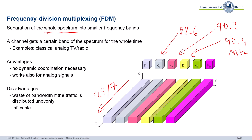In FDM a channel gets a certain band of the spectrum the whole time — that's the classical analog TV scheme. A big advantage is that you don't need complex dynamic coordination; some authority simply assigns each radio station its frequency, such as 88.6 MHz or 90.2 MHz, and it works for analog signals with no dynamic coordination necessary.